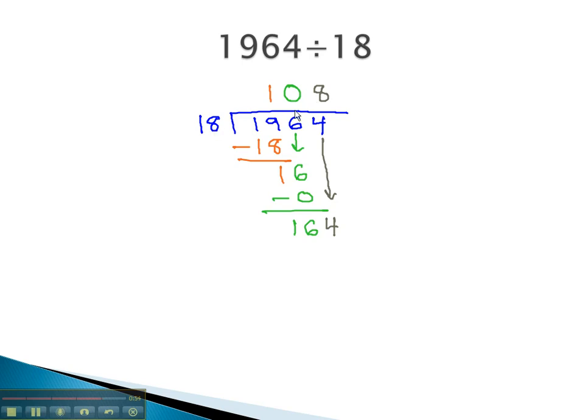8 times 18, well, 8 times 8 is 64. Carry the 6, and 8 times 1 is 8. 8 and 6 more is 14. When we subtract, we get 20.